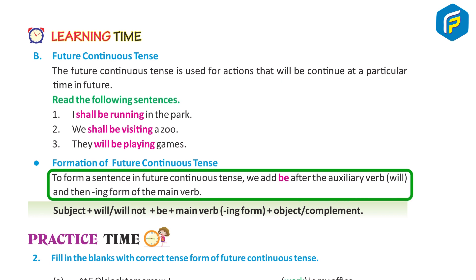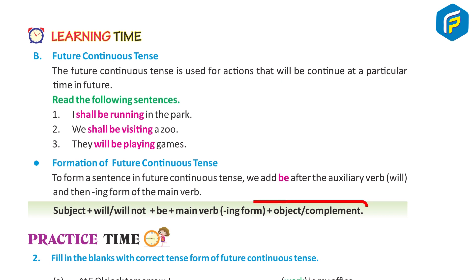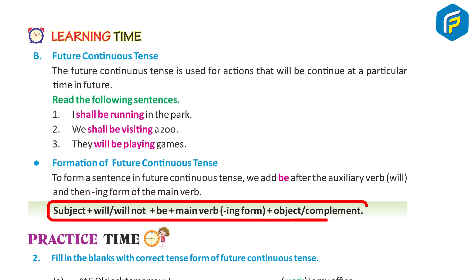Formation of Future Continuous Tense: To form a sentence in future continuous tense, we add 'be' after the auxiliary verb 'will', then the '-ing' form of the main verb. Structure: Subject + will/will not + be + main verb (-ing) + object/complement.